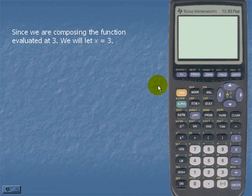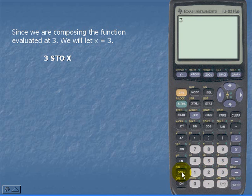Since we're composing the function evaluated at 3, we will let x equal 3. In order to store this in the calculator, we'll simply enter our value for x, which is 3. We're going to use the store feature, which is STO, and we're going to store that for x. And we're going to lock it in by hitting enter.